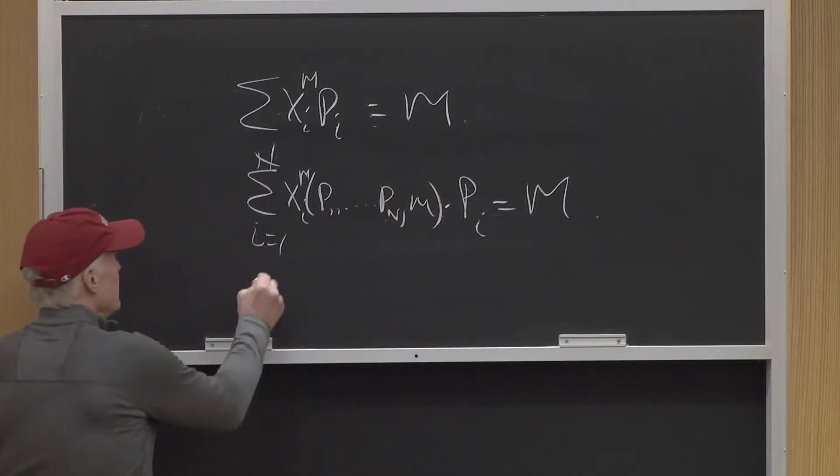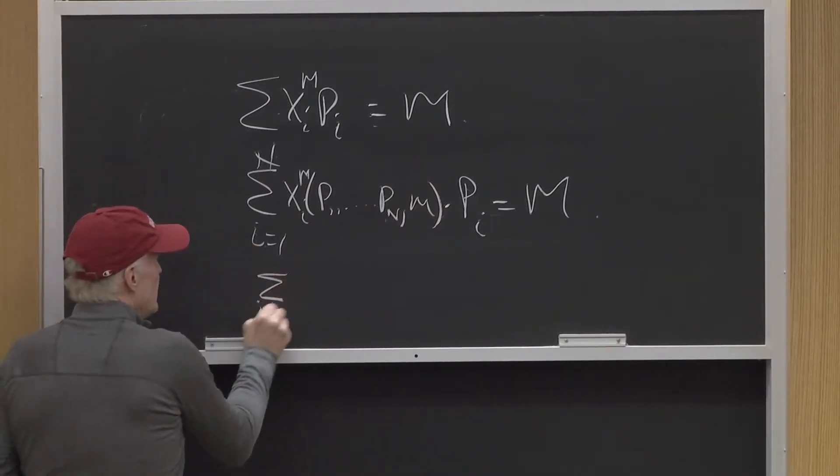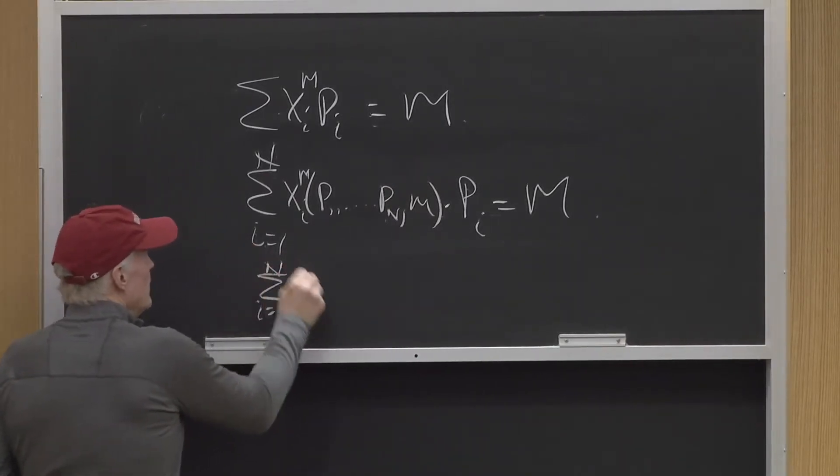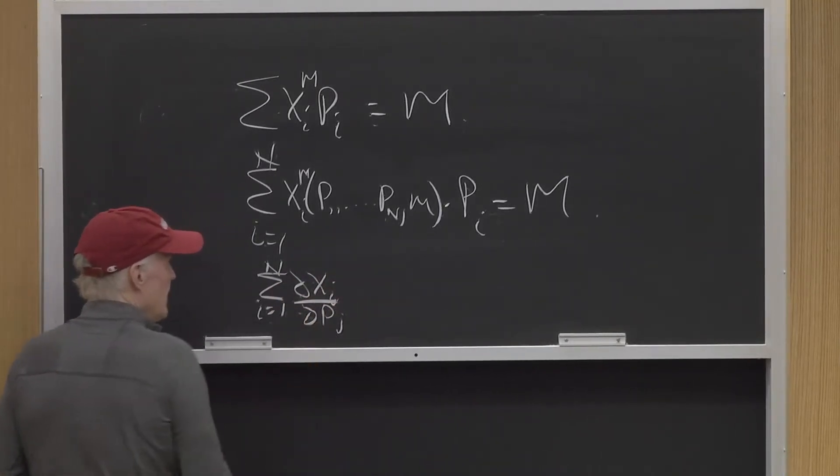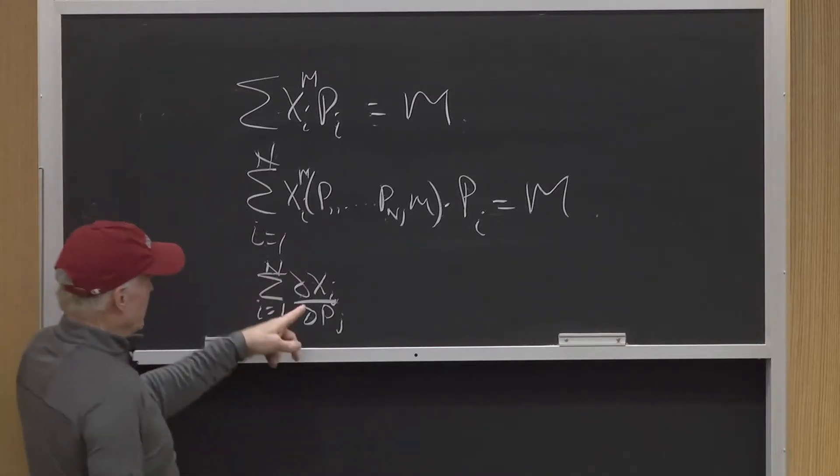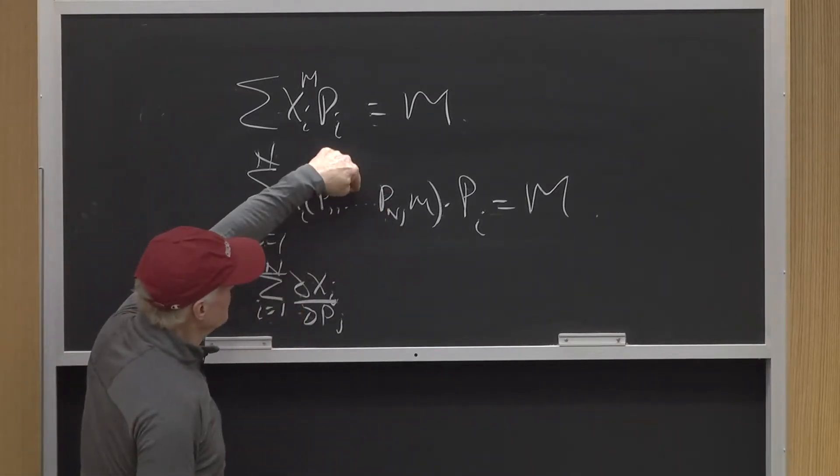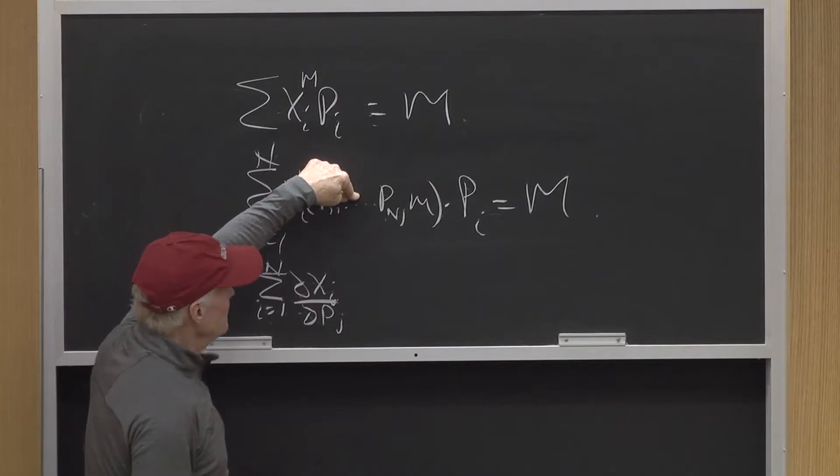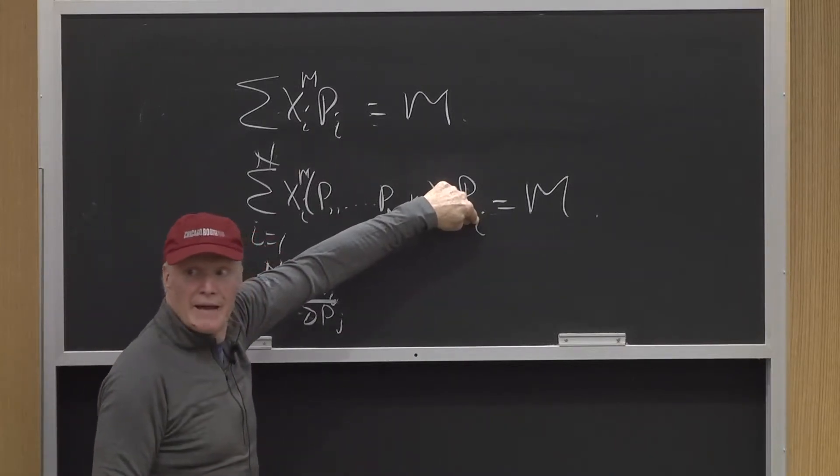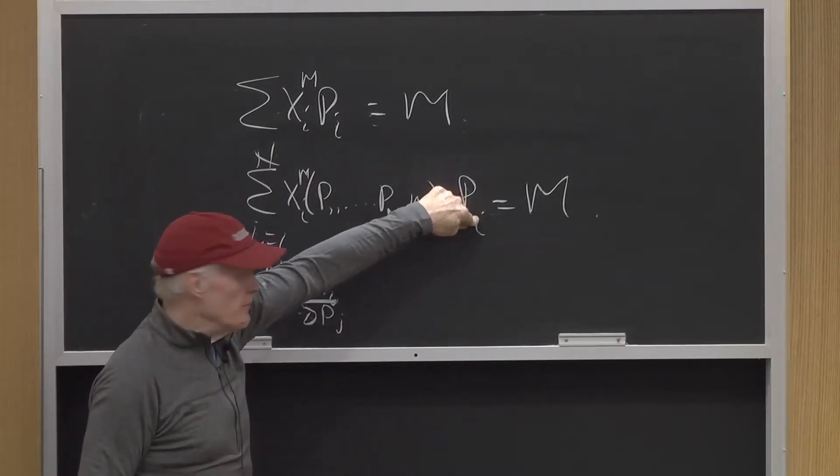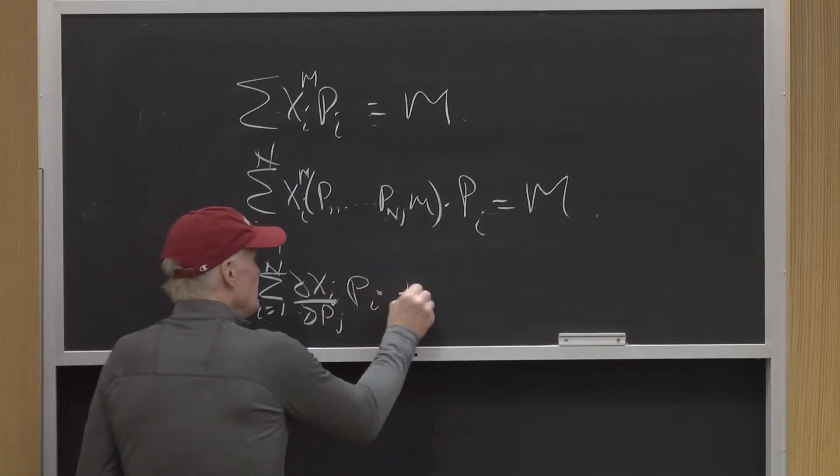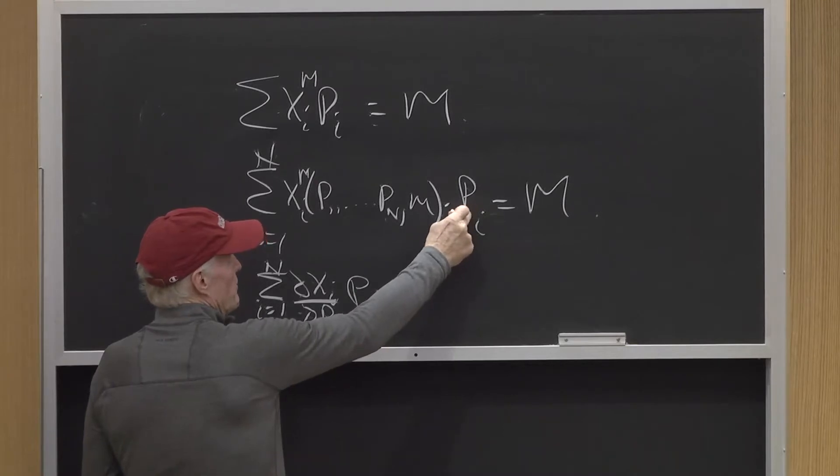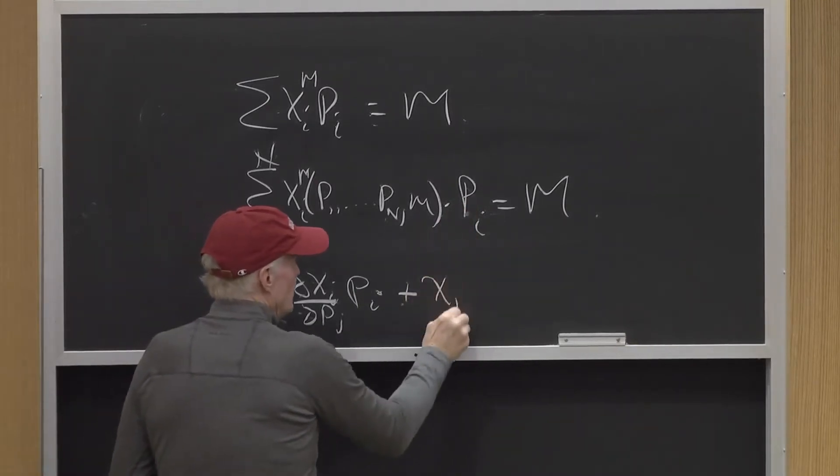So I'm going to get the sum from i equals 1 to n, partial xi, partial pj. That's going to get all the terms where pj shows up in here. But pj also shows up one time over here, when i times pj, pi, plus